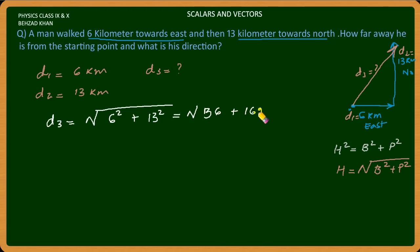This will be 169. And if we solve it, this will become 205. So d3 equals 14.3 kilometer. So the resultant distance will be 14.3.